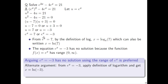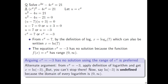But here's an alternate argument. You can start from e to the x equals negative 3, apply the definition of logarithm, and get x equals ln of negative 3. But you can't stop there — you've got to say ln of negative 3 is undefined, because the domain of every logarithm is 0 to infinity. So x equals ln of negative 3 is not a number because ln of negative 3 is undefined. The fact that we're trying to feed in the input of negative 3 doesn't work.